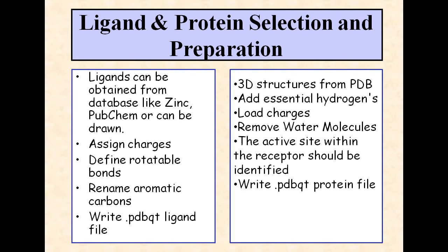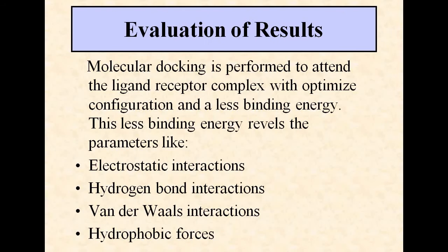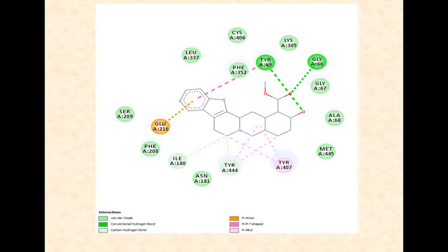After ligand and protein selection and preparation, we can proceed to docking by selecting the grid and docking the ligand and the protein. After docking, we evaluate the results. Molecular docking is performed to obtain the ligand-receptor complex with optimized configuration and minimum binding energy. This binding energy reveals parameters like electrostatic interactions, hydrogen bond interactions, van der Waals interactions, and hydrophobic forces between the ligand and the receptor.